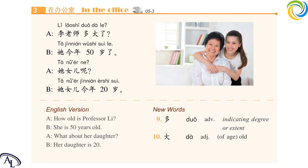课文 3 Text 3. 李老师多大了？她今年五十岁了。她女儿呢？她女儿今年二十岁。